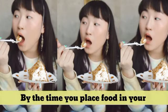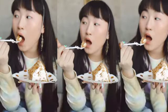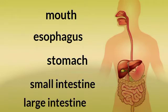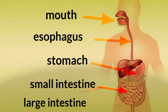By the time you place food in your mouth, the digestive system starts working. The mouth, esophagus, stomach, small and large intestines work together to break down food so that the body will absorb food nutrients.